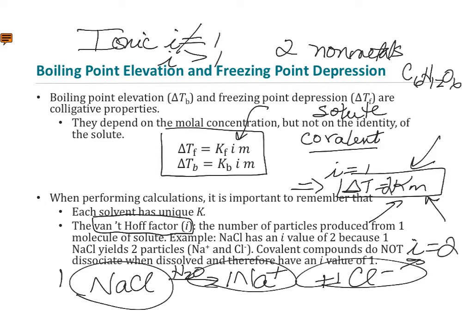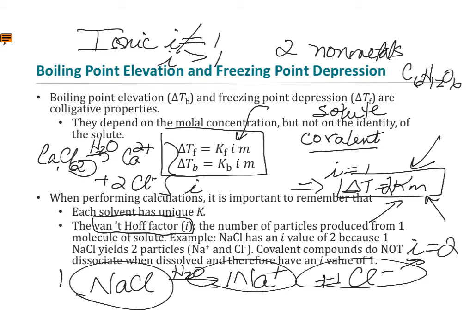What would the i value be for calcium chloride dissolved in water? You get one calcium ion and two chloride ions, so i equals 3 — three particles for every one calcium chloride dissolved. In Michigan, where it snows a lot, the ice-laying trucks use calcium chloride, not sodium chloride, because of the i factor. They get more bang for their buck — calcium chloride has a larger impact on lowering the freezing point of ice on the road, so it doesn't freeze until, say, minus 10 degrees.